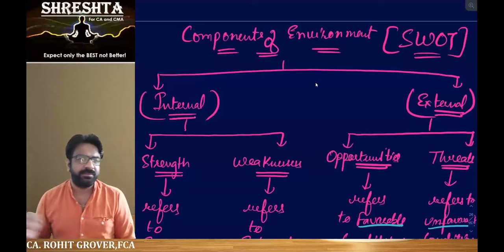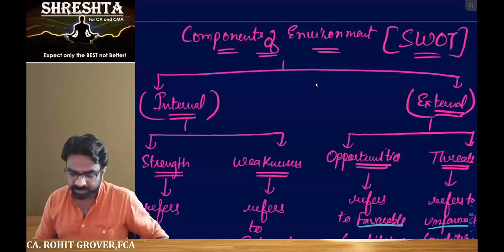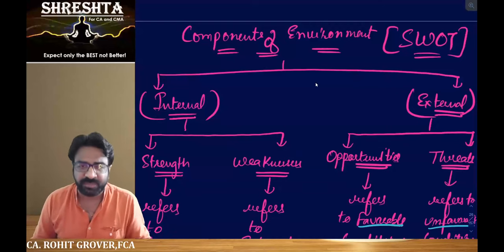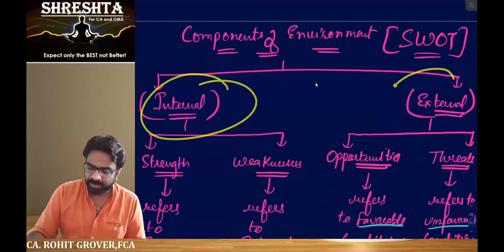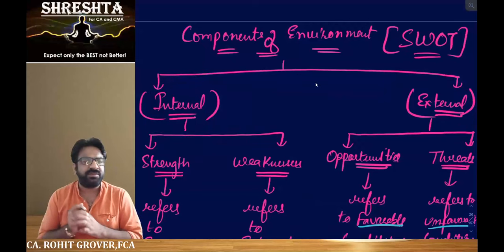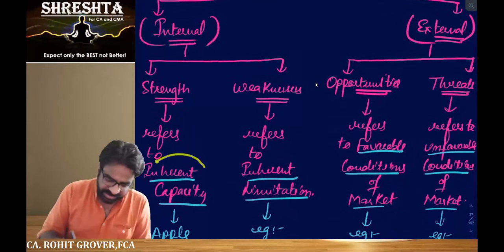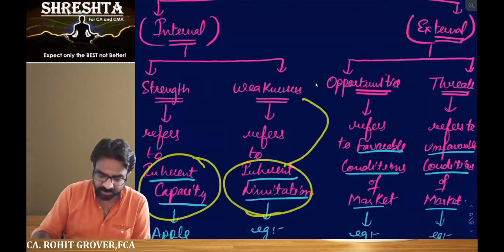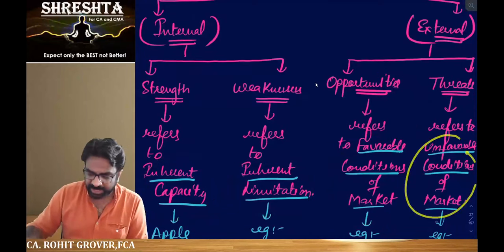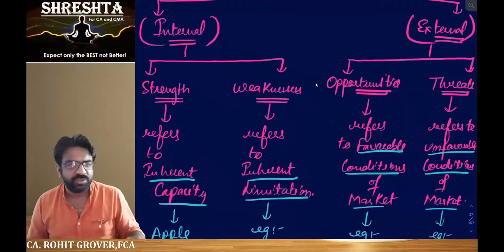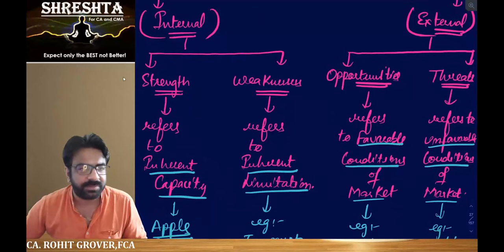Harshiti, what was the topic we did? We did the components of environment. When we talk about components, internal and external come to mind. Strengths and weaknesses are internal; opportunities and threats are external. Strength refers to inherent capacity, and inherent limitation is known as weakness. Favorable conditions of the markets are known as opportunities, and unfavorable conditions are known as threats.